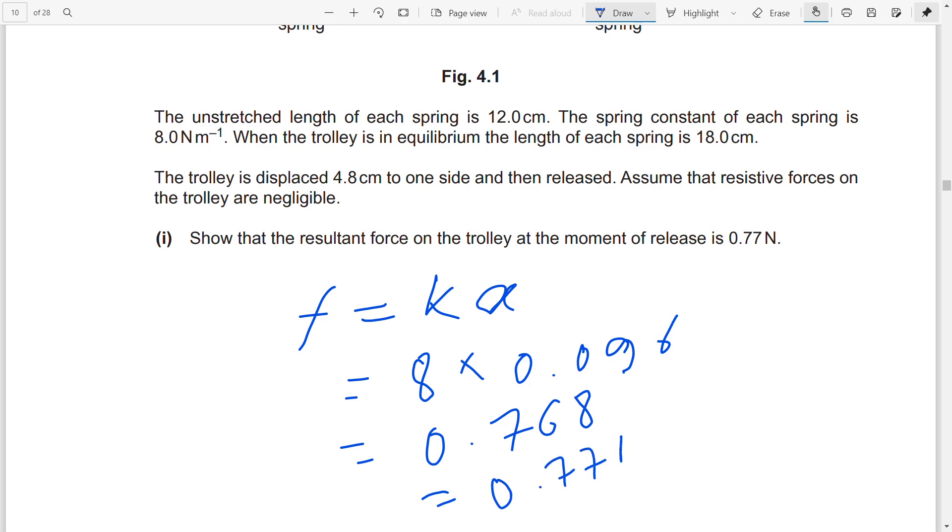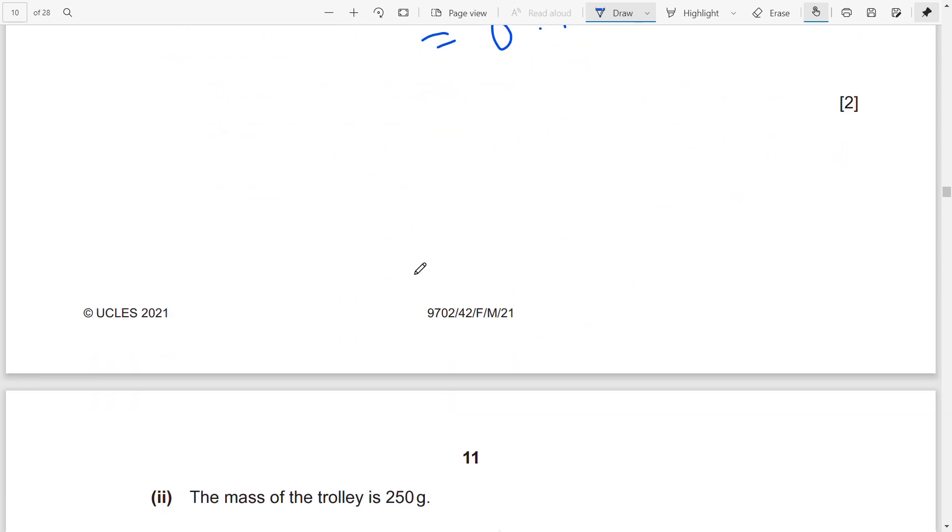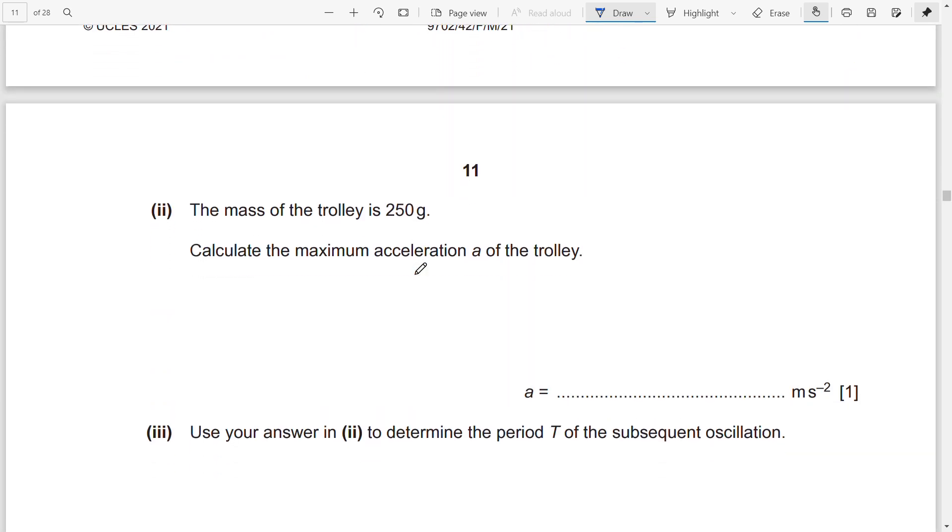And the mass of the trolley. For mass of the trolley, what you can do is F = ma. So 0.77 equals to mass times acceleration. Acceleration equals 0.77 over 25 times 10 to the power -3, because you have it in grams. So from here you'll get 3.08 m/s².